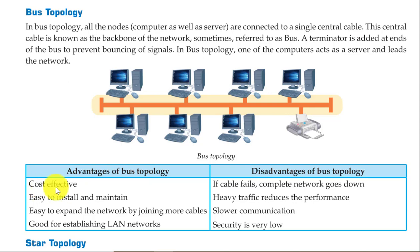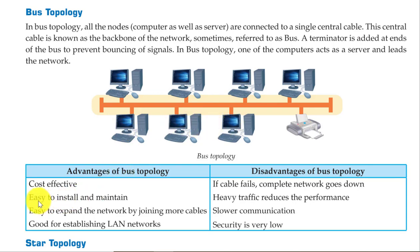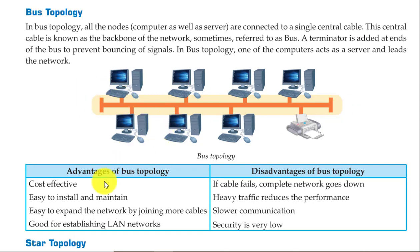Advantages of bus topology: it is cost effective and easy to install and maintain. You can easily expand the network by joining more cables. It is good for establishing LAN networks. Disadvantages: if the cable fails, the complete network goes down. Heavy traffic reduces performance, and communication becomes slower when more computers are connected. Security is very low.